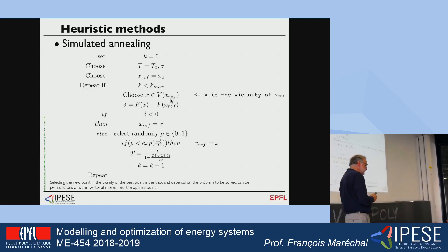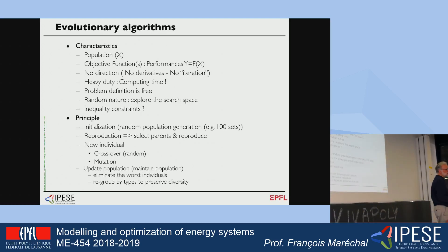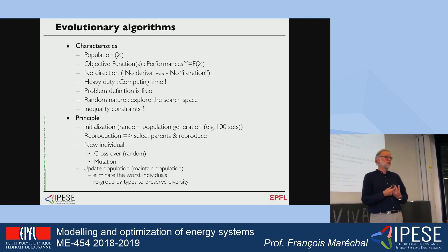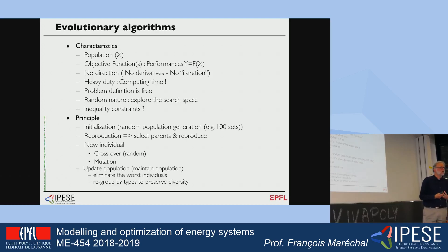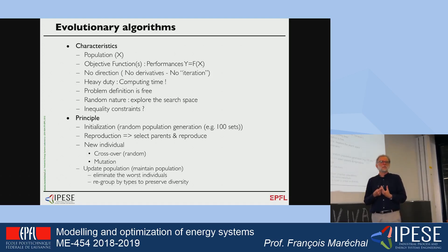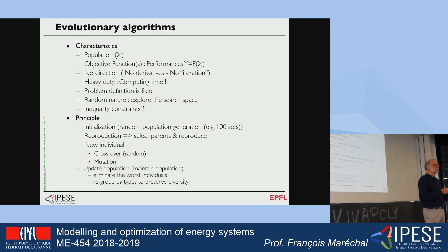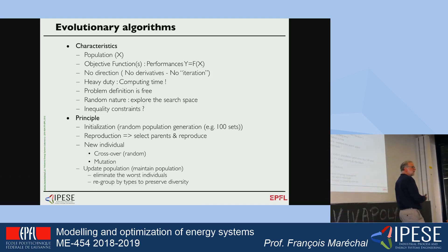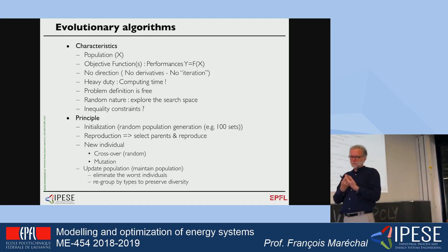Another method typically used in our field is the evolutionary algorithm. The principle is to work with a population and reproduce how human populations have evolved. A population evolves by creating children using parents that are still alive, and the ones with the highest chance of surviving are those best integrated in their environment — meaning those most compatible for reproduction. Individuals with configurations poorly suited to the environment have much lower chances of fitting in.